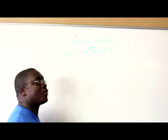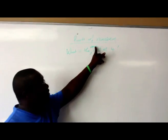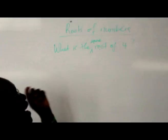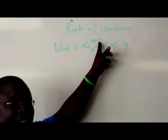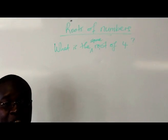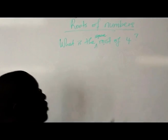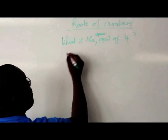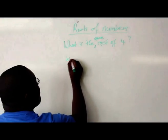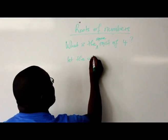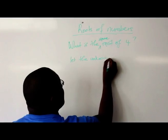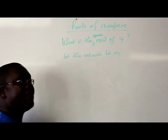When we're saying the square root, we're saying which number can multiply itself two times so that we get 4. So let's call the number m. Let the unknown number be m. If it's m, then we're saying m times m will give us 4.